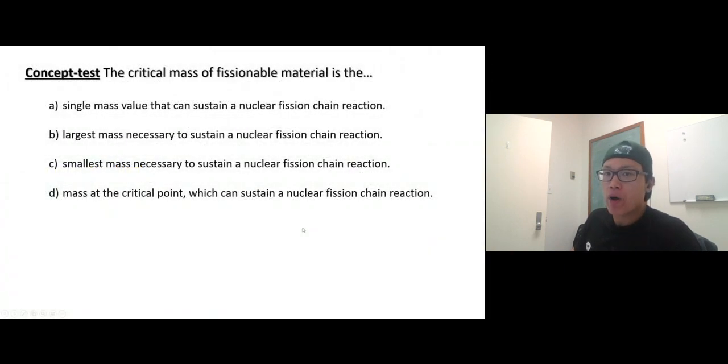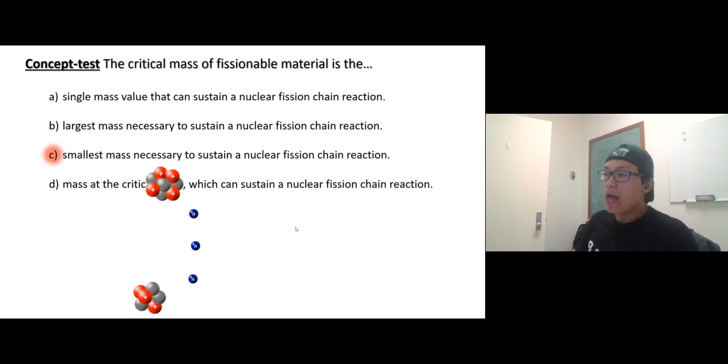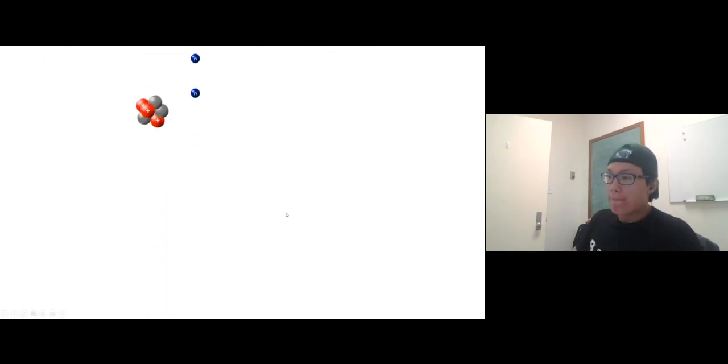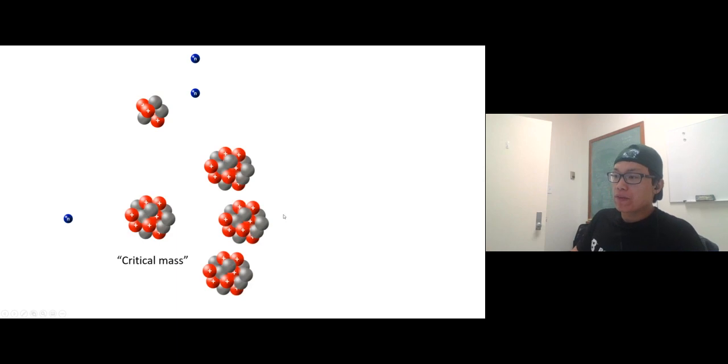Before we go further, what is the critical mass of fissionable material? It is C: the smallest mass necessary to sustain a nuclear fission chain reaction. If we don't have enough fissionable material, one fission happens and the neutron will just hit the container or escape. But if you have critical mass, neutrons come in, break apart, and keep going.